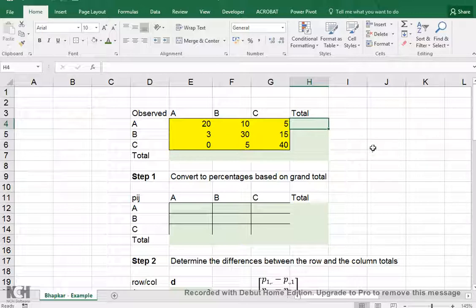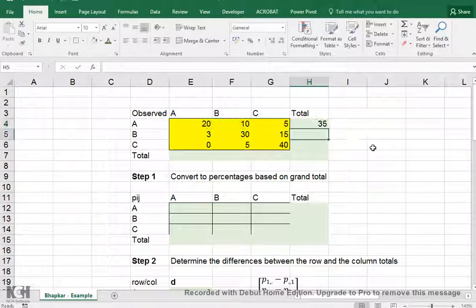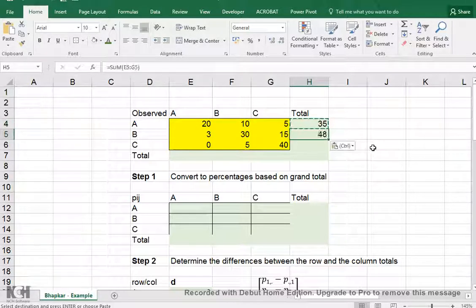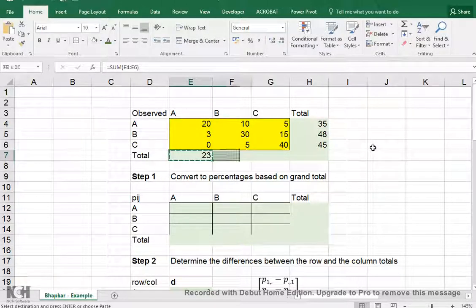The first thing we need are the totals, so Alt-Equals is a nice shortcut for that. The row totals for my three rows and the column total, Alt-Equal again, and Ctrl-C, and I can do this also for the grand total.